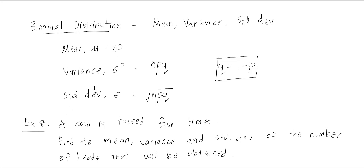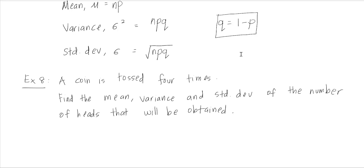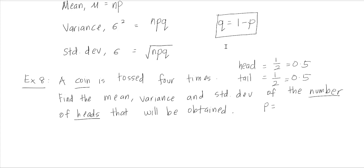Now we look at the example. A coin is tossed four times. When tossing a coin, the probability of getting a head is 1 over 2 or 0.5, and getting a tail is also 1 over 2, equal to 0.5. The question asks us to find the mean, variance, and standard deviation of the number of heads.